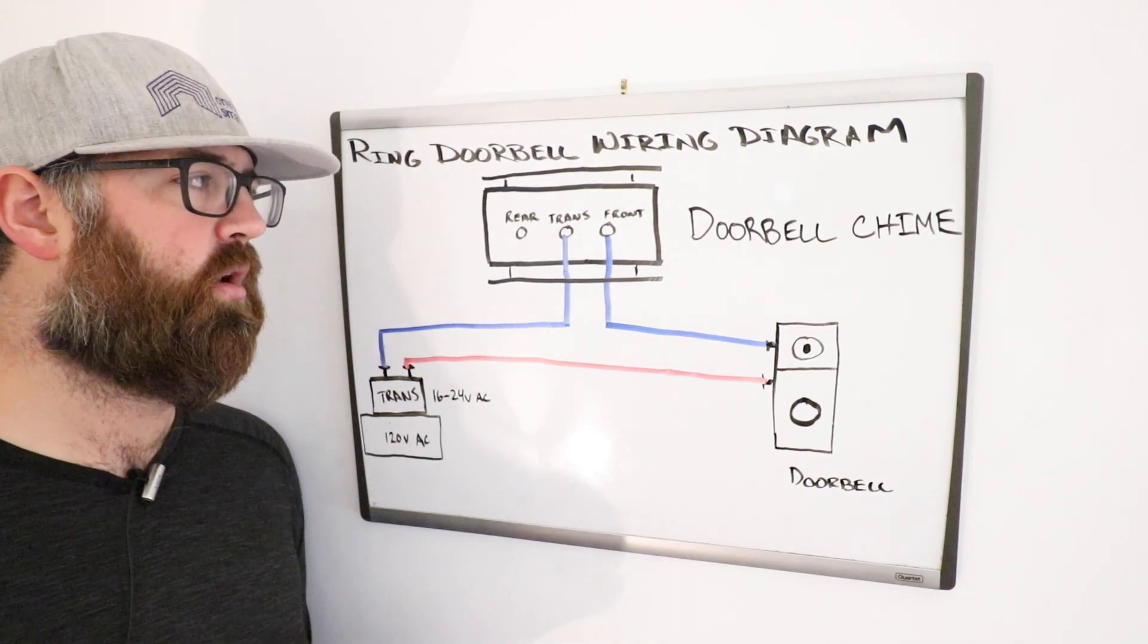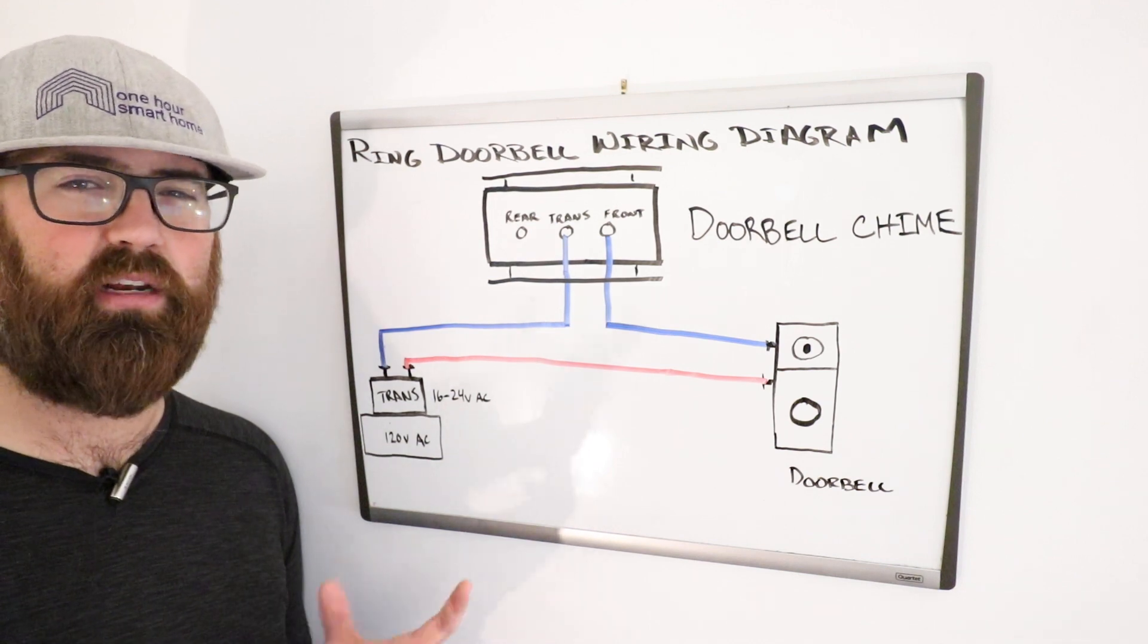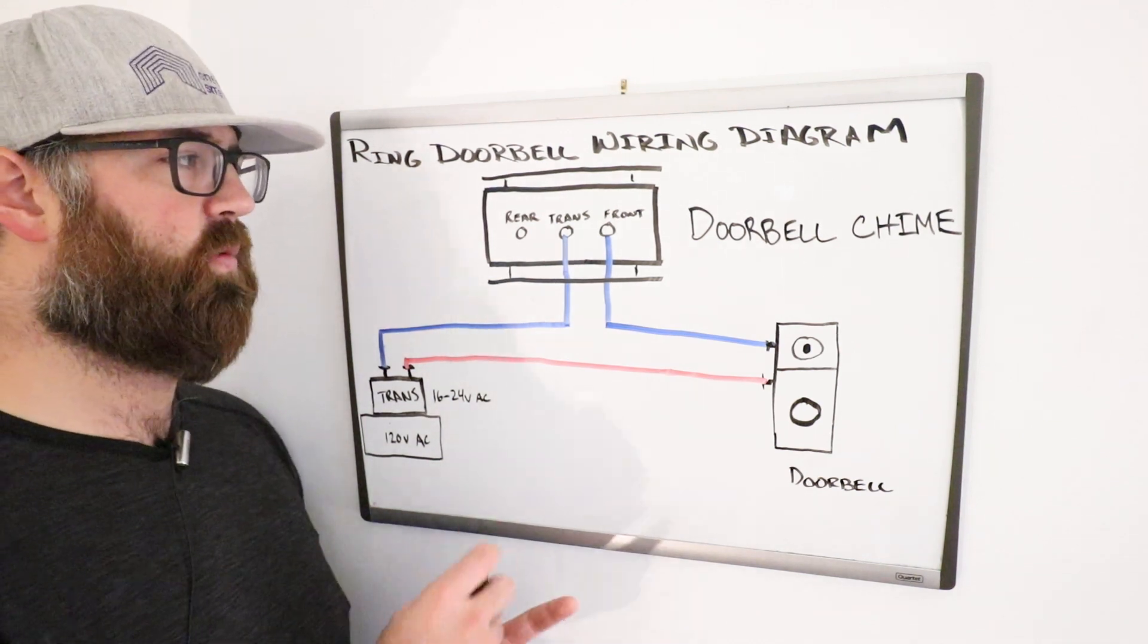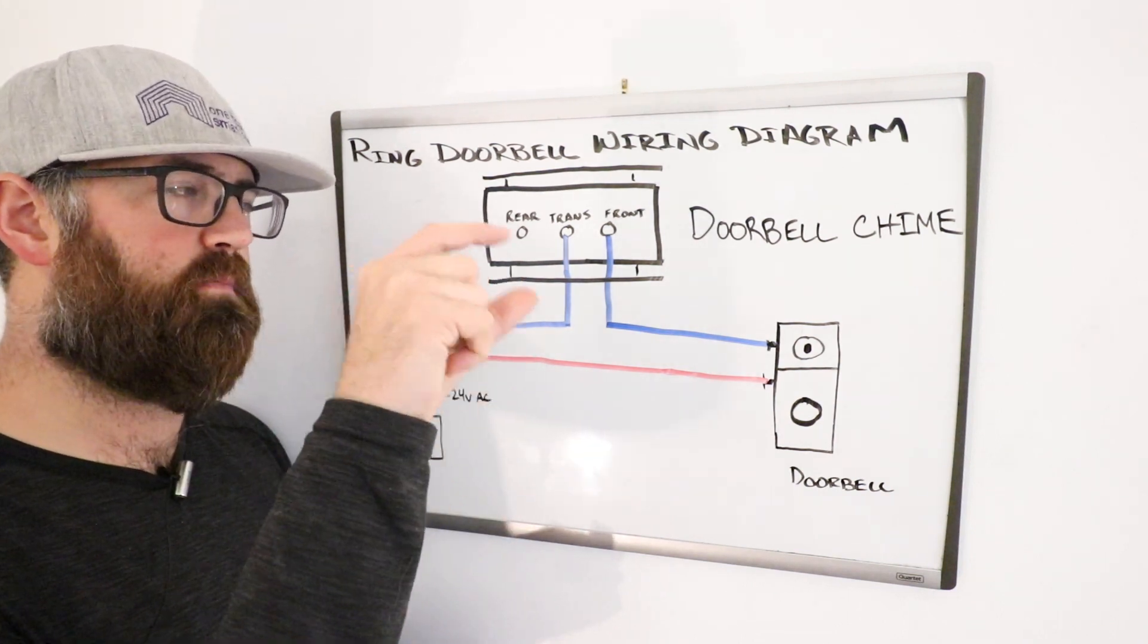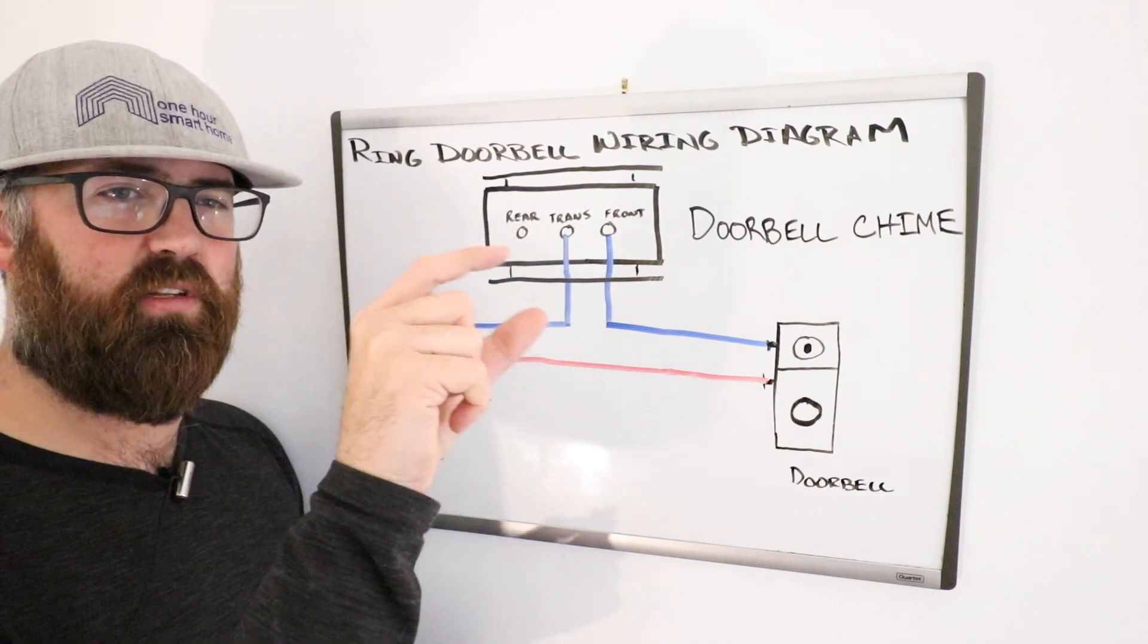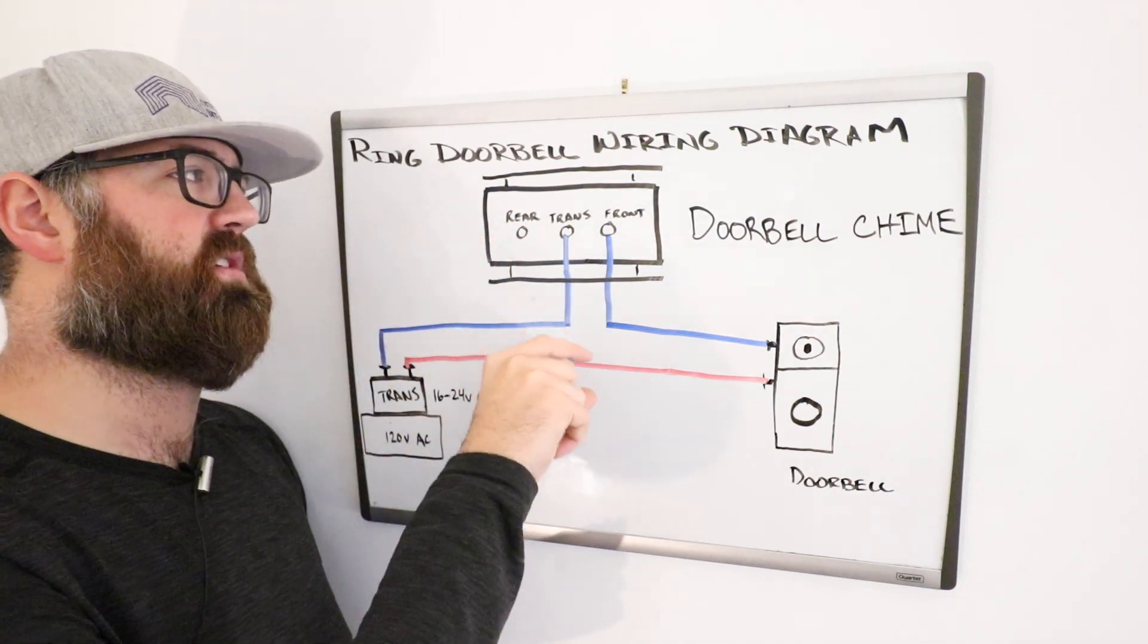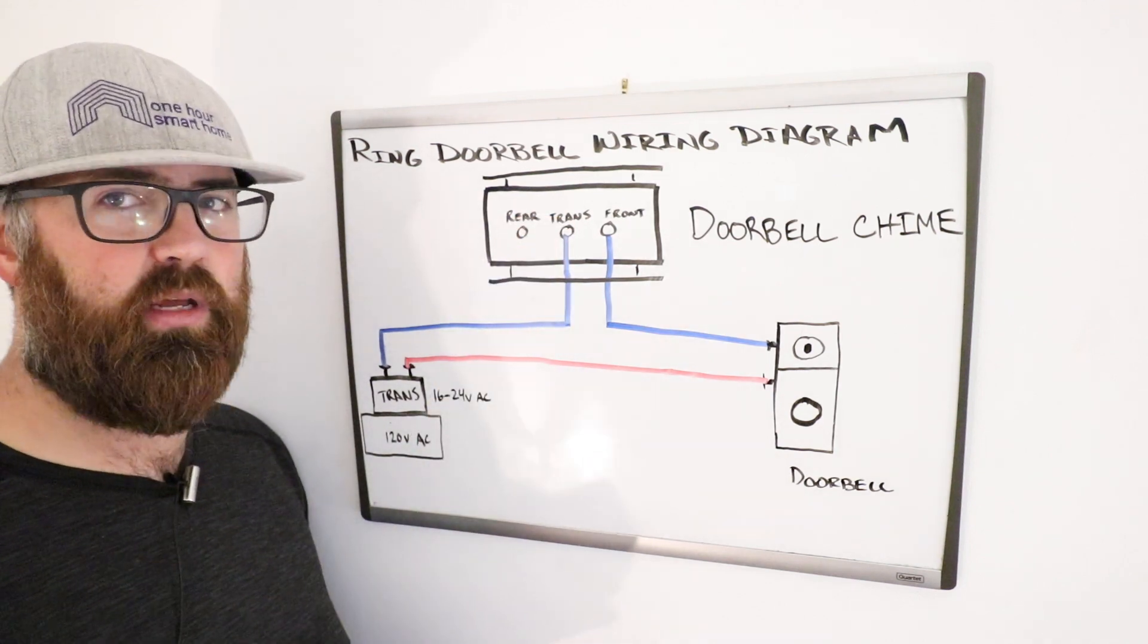So the doorbell chime, all it is is really a kind of magnetic solenoid is what they call it. And when current is applied, it has a little spring in it, and that spring and magnetic current that is created or magnetic field that's created from the electrical current causes it to move up a piston and it hits the doorbell chime and it makes a tone for you.